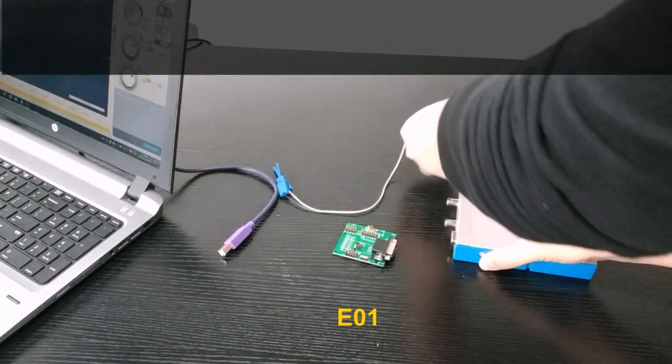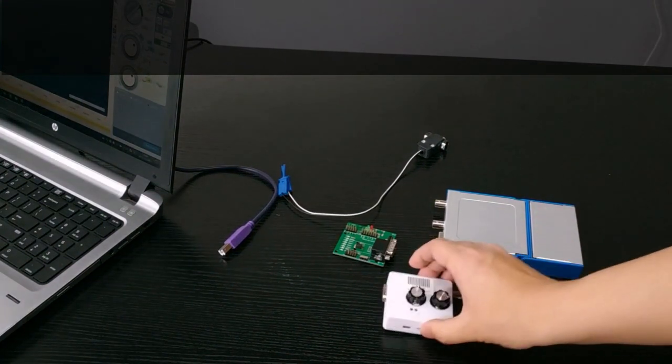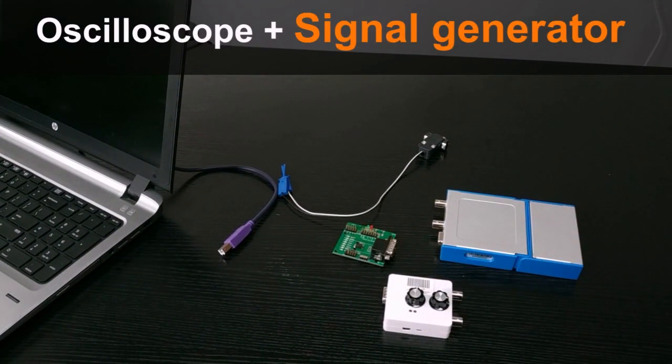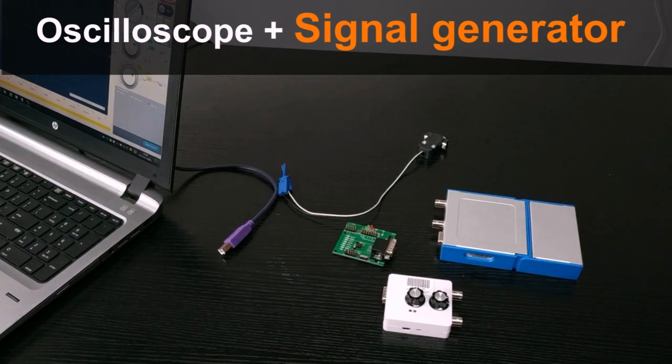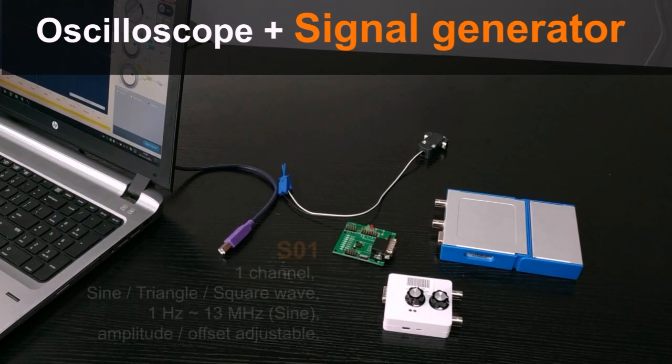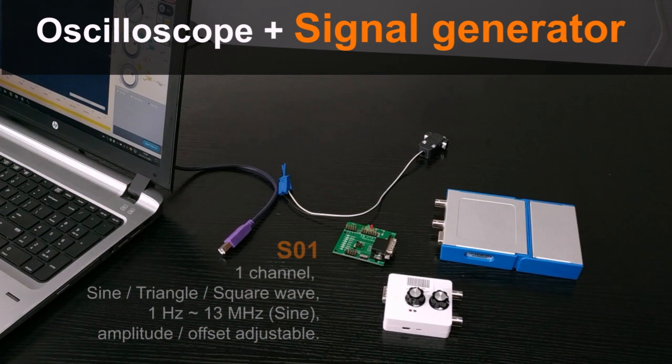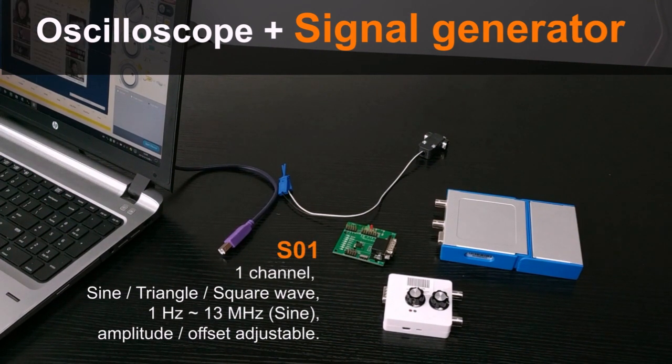This other module is a signal generator. It can generate frequencies from 0 to 13 MHz. It can generate square waves, triangle waves and sine waves. The amplitude can go from 0 to 4V.